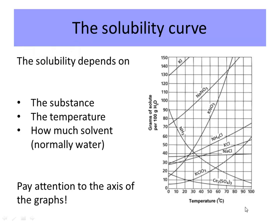Solubility depends on a couple of different things. First is the substance — different substances have different solubilities, and the substance is indicated by the formula on the graph. Also, temperature affects how soluble something is.